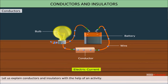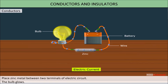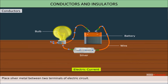Let us explain conductor and insulator with the help of an activity. Place the zinc metal between two terminals of an electric circuit. The bulb glows. Place the silver metal between two terminals of an electric circuit. The bulb glows. This type of material is called a conductor.